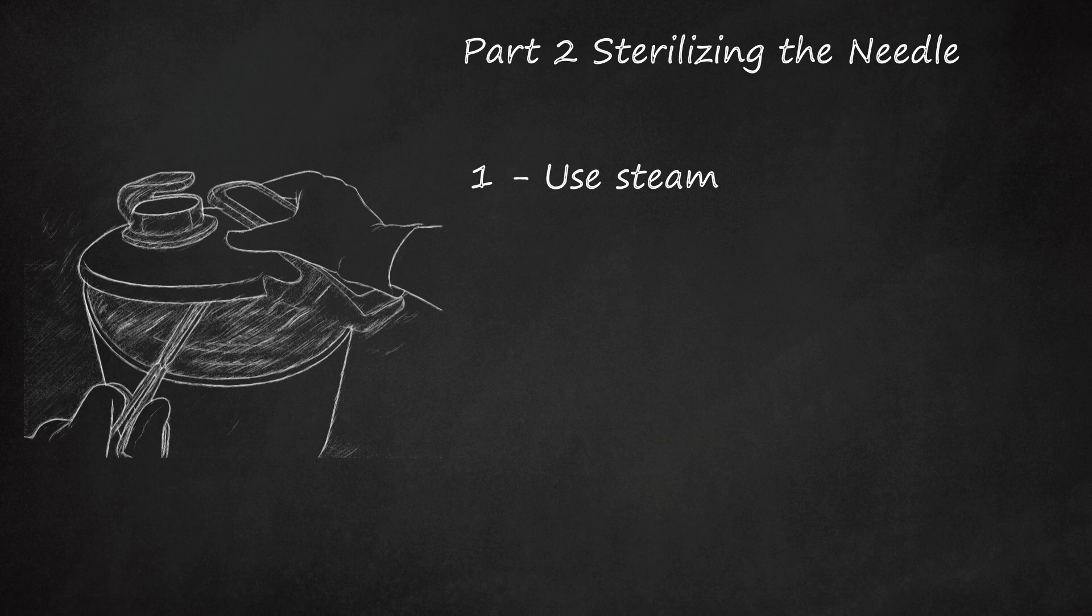You can also use a steaming pot to do this instead of a pressure cooker. Put water in the bottom pot. When it starts to boil, place the needle in the pot with the holes over the boiling pot, then cover it with a lid. Let it steam for at least 20 minutes.